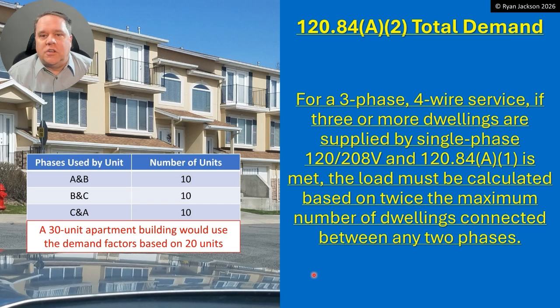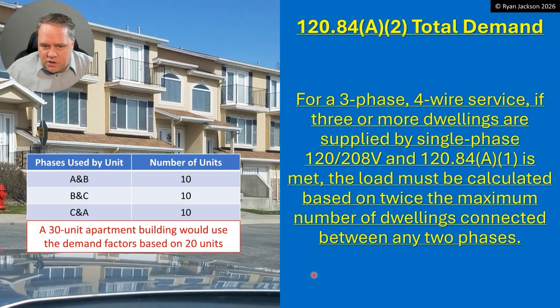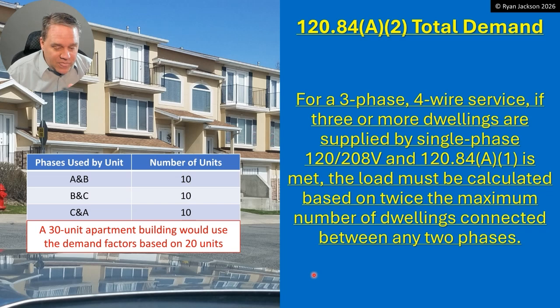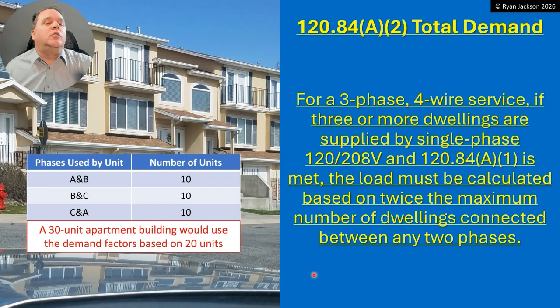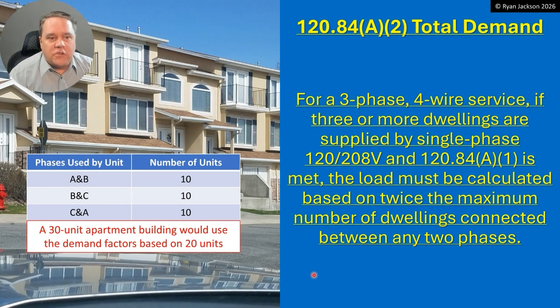So when doing the load calculation — let's say it's 10,000 volt-amps per unit — you're going to say there are only 20 units, not 30. You take 20 units times your calculated load, then plug that into your demand factor. People are misunderstanding this change and saying it screwed them — that now they only get to pretend there are 20 units when doing the demand factor. No. Before you even get to the demand factor, you get to drop 10 units entirely. You look at the 30-unit building and say there are only 20 units here, then multiply by your VA, then apply the demand factor. This will in every instance result in a smaller load calculation than in the 2023 and previous versions.